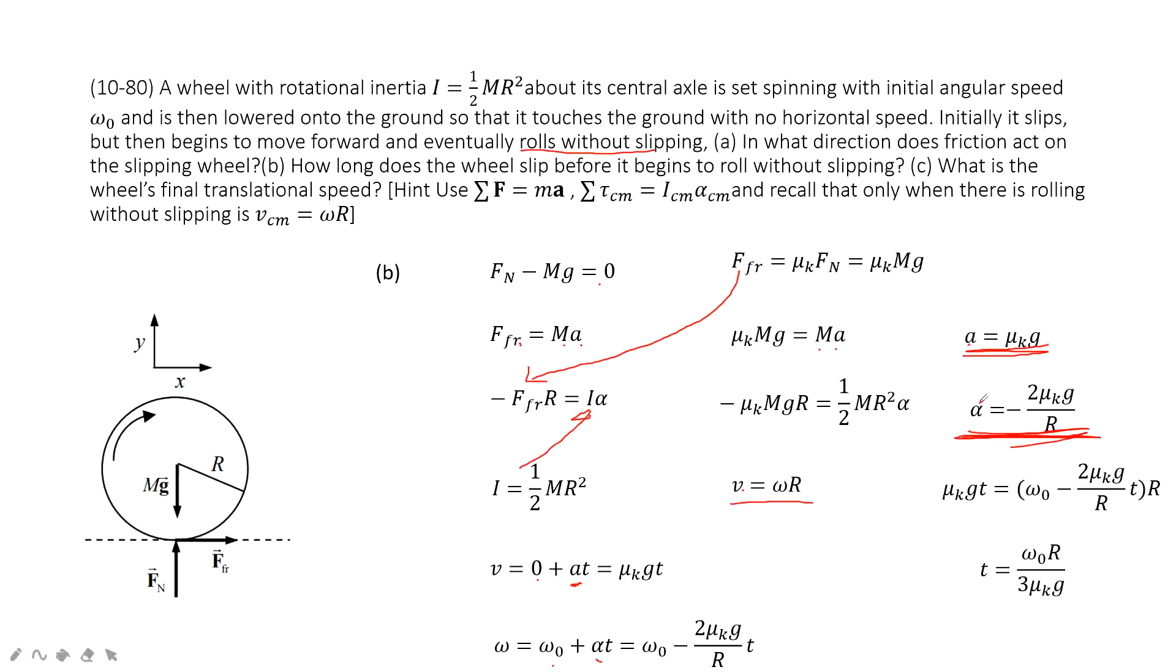Now input the acceleration and angular acceleration into these two functions. You get linear velocity as a function of time and angular velocity as a function of time. Input v and omega into the equation v equals ωR, and solve for time t. That completes part B.